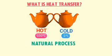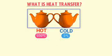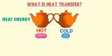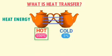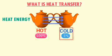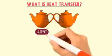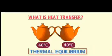A natural process of transferring heat energy or thermal energy occurs between these two objects. Heat or thermal energy from the hot object transfers to the cold object until both bodies reach equal temperature. For example, the temperature of the hot object drops to 40 degrees centigrade and the temperature of the cold object rises to 40 degrees centigrade. This state is known as thermal equilibrium.